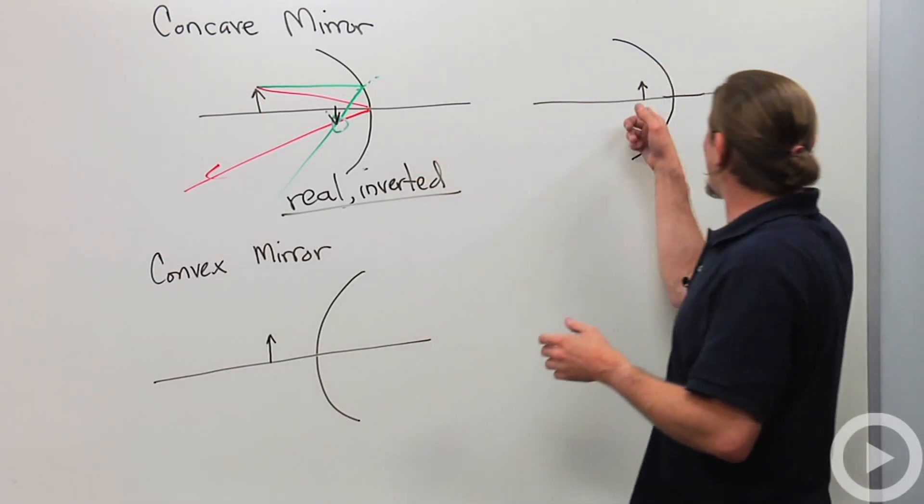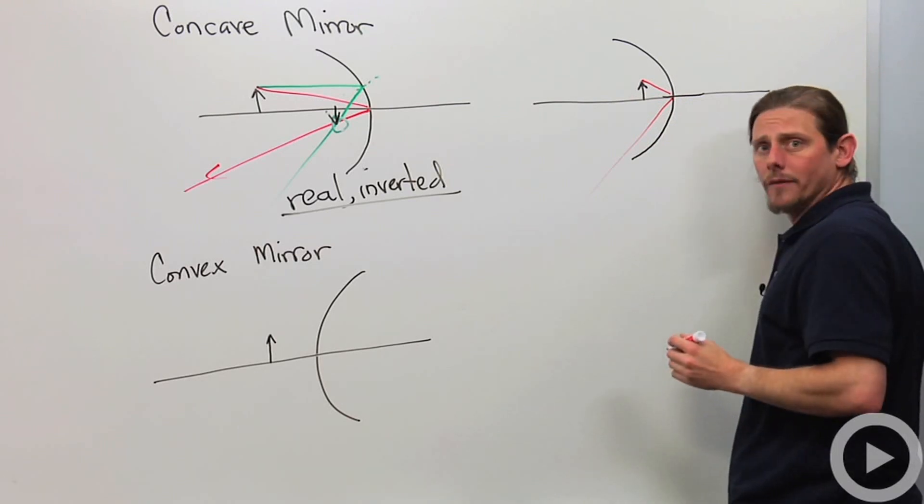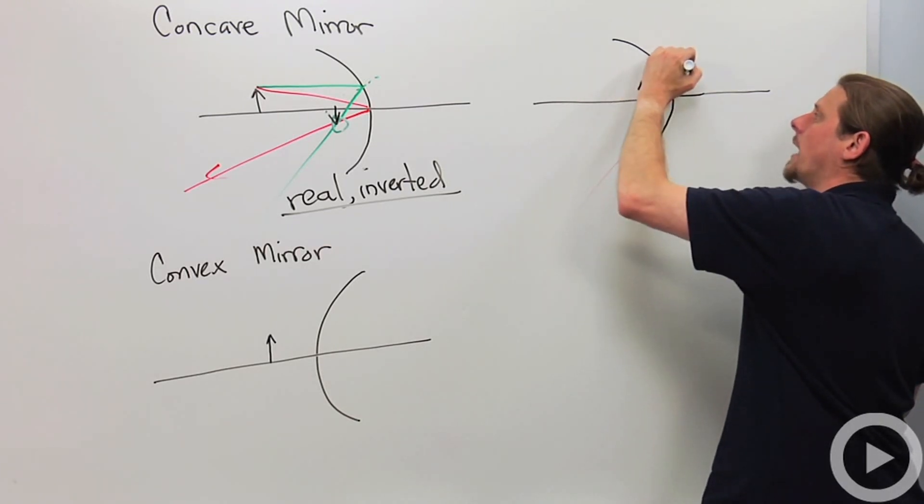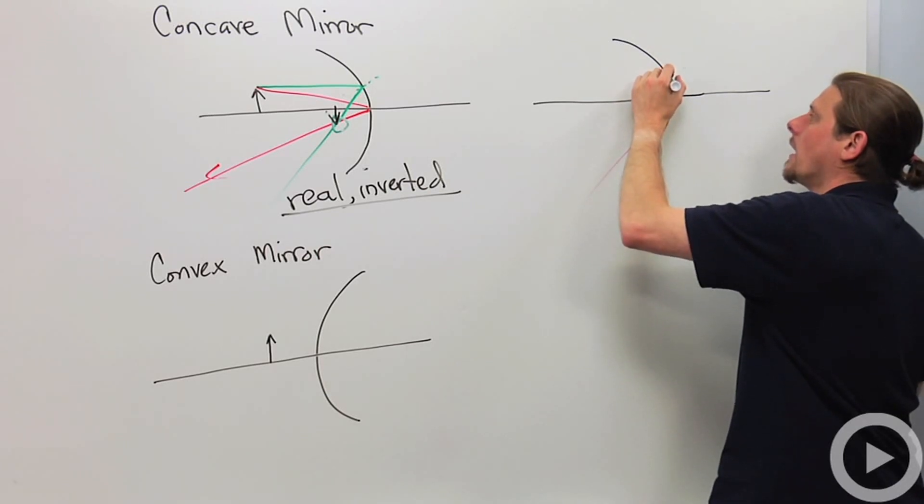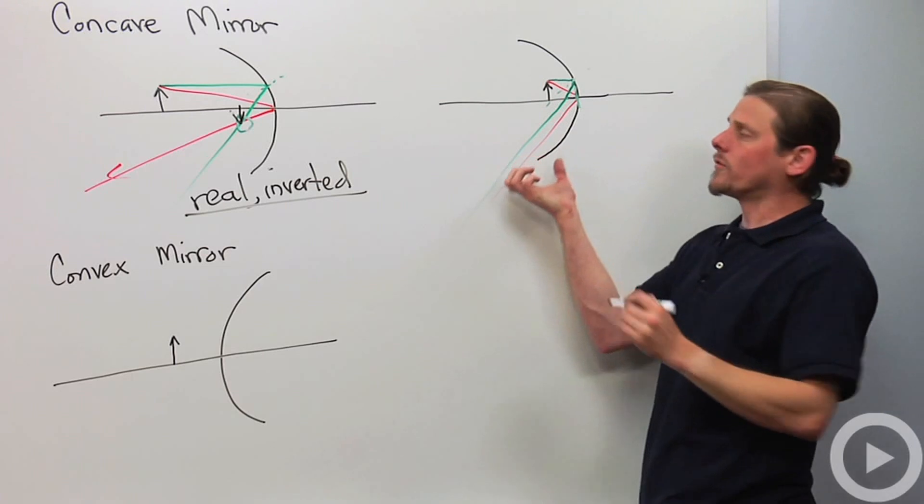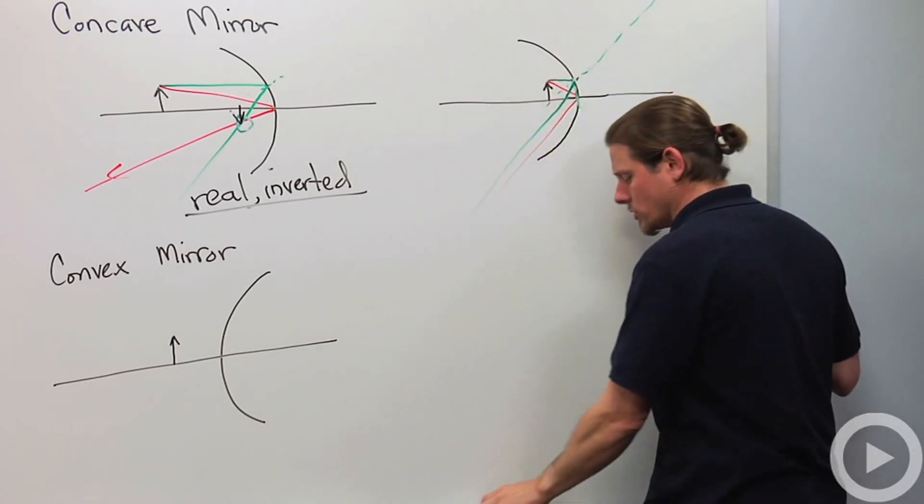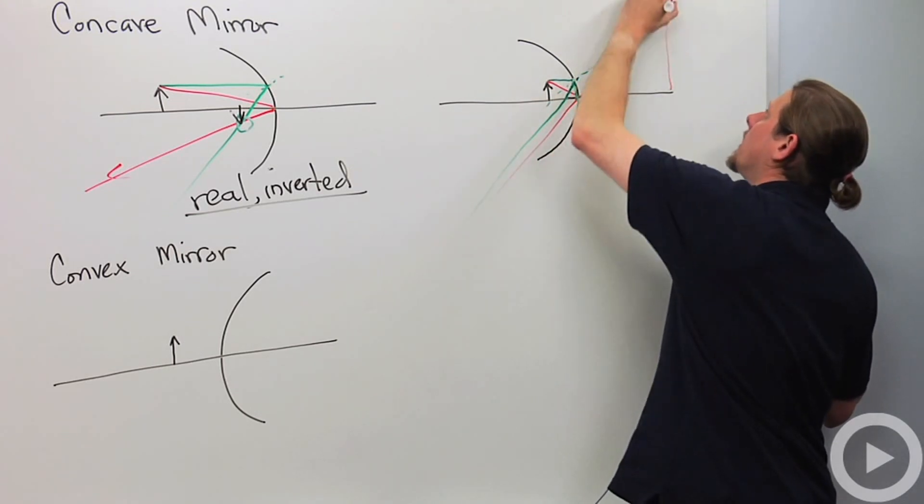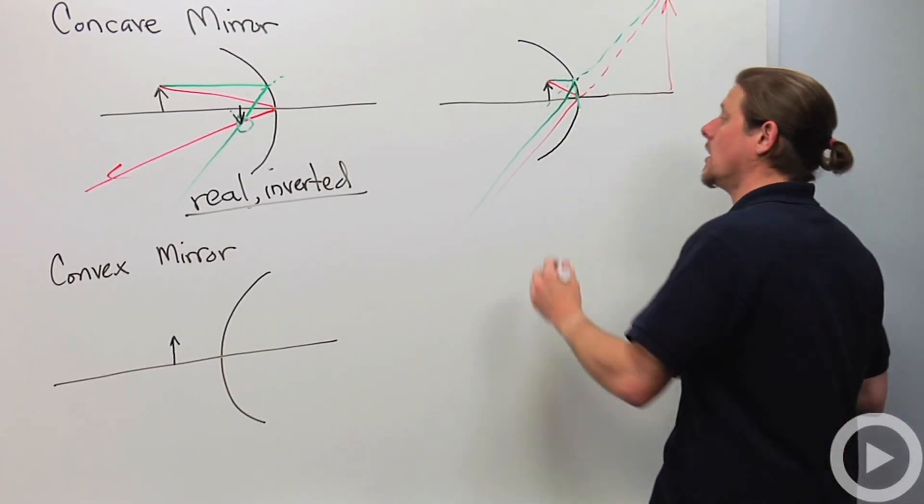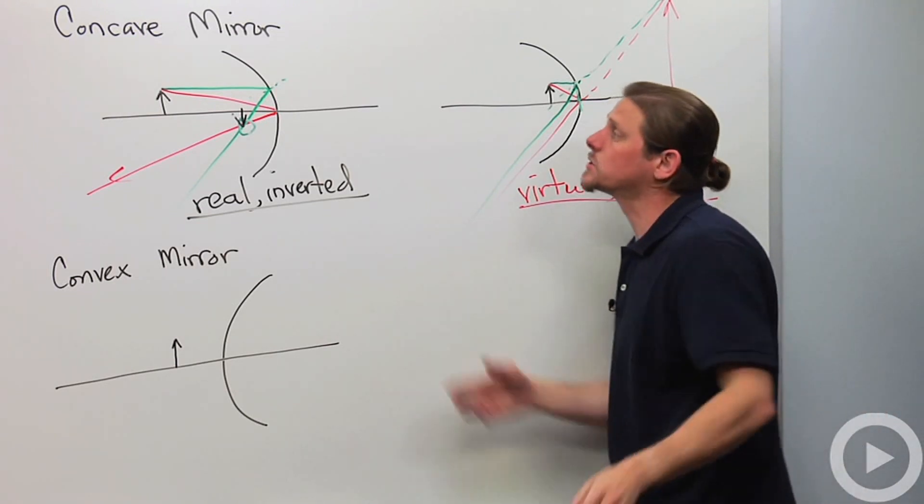So what happens if I get closer than the focal length? Again, we'll draw two rays. There's one. And then let's draw another one. Draw this one in green. So we'll go straight over. And remember, I've got to give myself my normal. And these two are actually not going to overlap. They're not going to ever recombine. So I have to continue them backwards to see where my image is. And my image is now over here. Much taller and virtual and erect. So this one's virtual, erect.